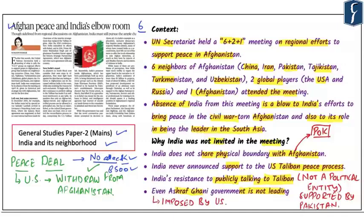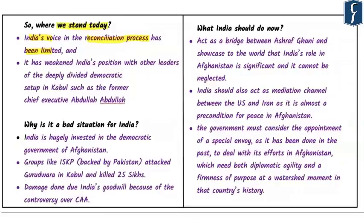The Taliban does not accept the Ashraf Ghani government as a democratically elected government. Moreover, if these talks succeed, there will be problems for Ashraf Ghani's government because the Taliban will come to power and Ashraf Ghani will be out. In such a scenario, even the great relationship between India and the Ashraf Ghani government of Afghanistan is not going to help India's cause in being a partner in peace negotiations.